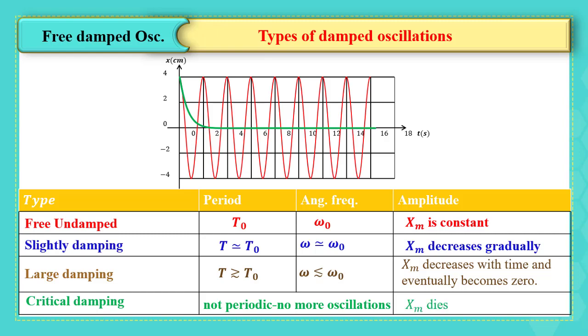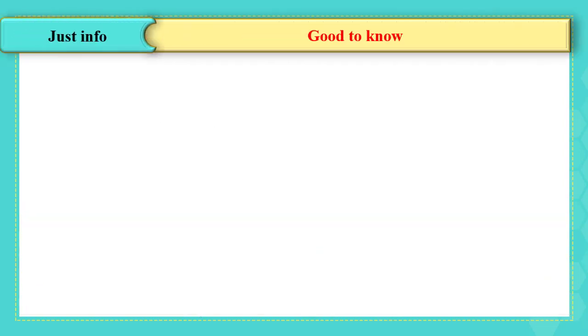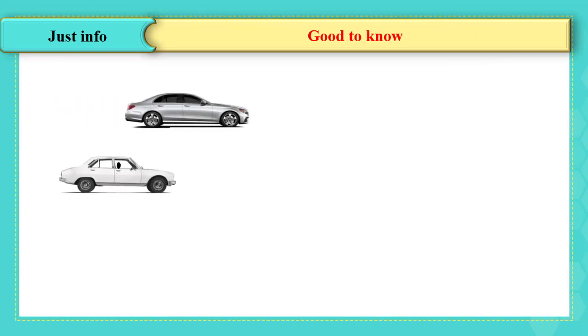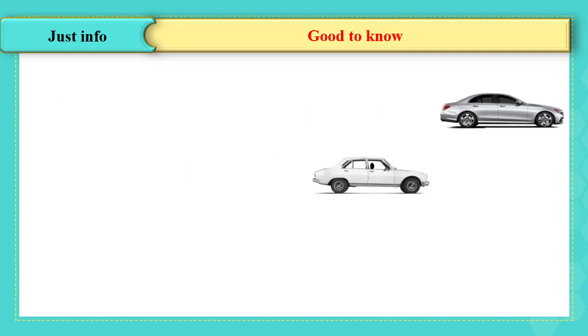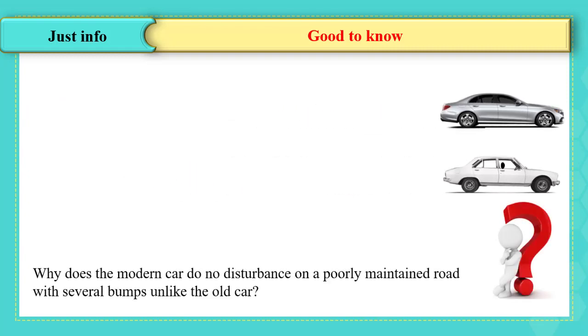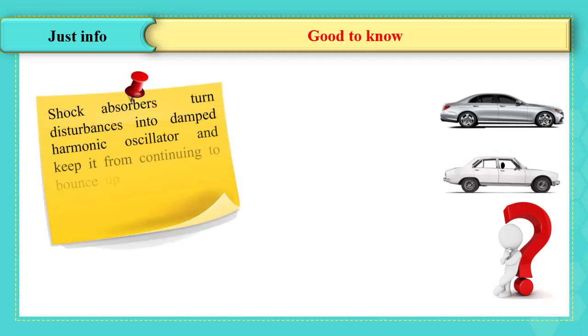After defining these forms of damping oscillations, it's good to know some information. Do you remember the question we have asked in the first video? It is the time to answer it. In cars, there are shock absorbers that turn it into a damped harmonic oscillator and keep it from continuing to bounce up and down after every bump or pothole a tire encounters. This makes riders feel more comfortable.